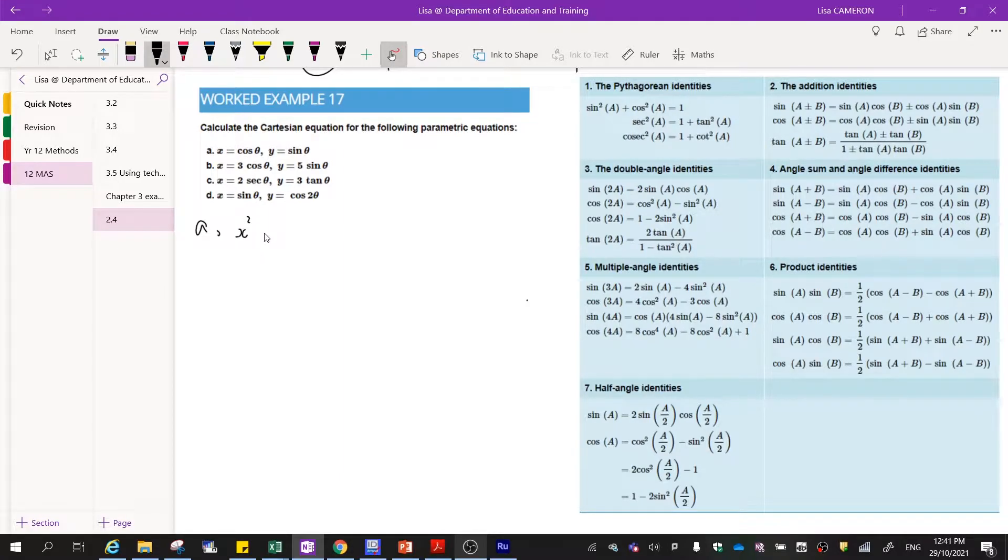So in order to get that to look similar, all I need to do is square each term. So if I square the x term and I square the cos term, I square the y term and I square the sine term, that means now I can do equation one plus equation two. That will give me x² + y² = cos²θ + sin²θ.